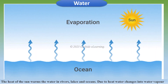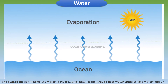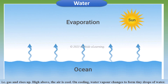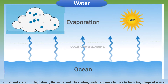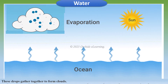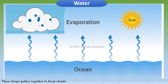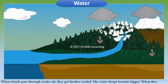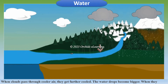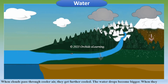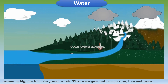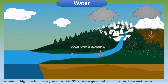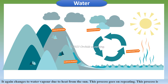The heat of the sun warms the water in rivers, lakes, and oceans. Due to heat, water changes into water vapor, which rises high up. The air above is cool, and on cooling, water vapor changes to form tiny drops of water. These drops gather together to form clouds. When clouds pass through cooler air, the water drops become bigger, and when they become too big they fall to the ground as rain. This water goes back into rivers, lakes, and oceans.